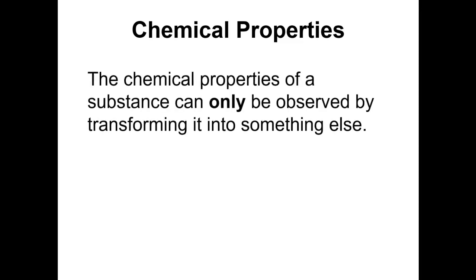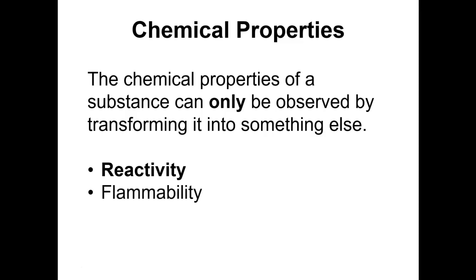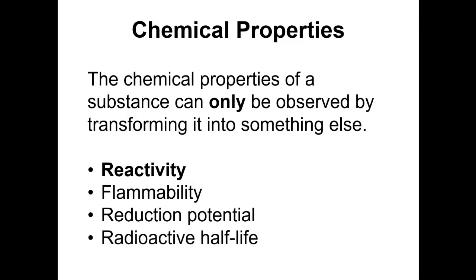A chemical property is something you have to destroy or transform a substance into something else in order to observe. Chemical properties can only be observed by transforming the substance. Generally we're talking about chemical reactivity — for example, flammability: you have to burn gasoline in order to observe that it is flammable and convert it into something else. Reduction potentials require you to oxidize or reduce a metal to determine them. The radioactive half-life of an element can only be determined by observing it as it undergoes radioactive decay and turns into something else.